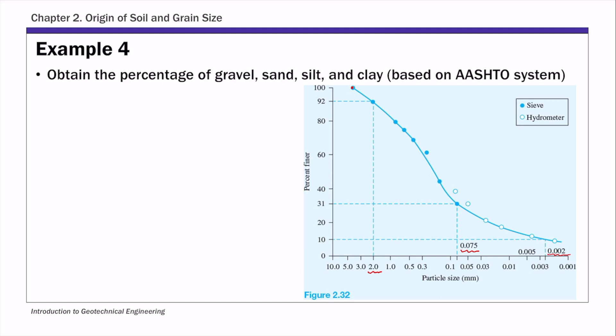So I'm going to make this simple table here. I'm going to put size in millimeter. So we have 2, 0.075, 0.002. So these are the three threshold values. And then you have percent finer.